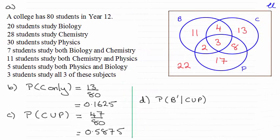Hi there. Now for this question, we were told that a student did chemistry or physics or both, and what's the probability that they didn't do biology? Well in order to answer this, it's a conditional probability type question. All we've got to do is just look at the students doing chemistry or physics or both — that's those students contained within this boundary that I'm showing you here.